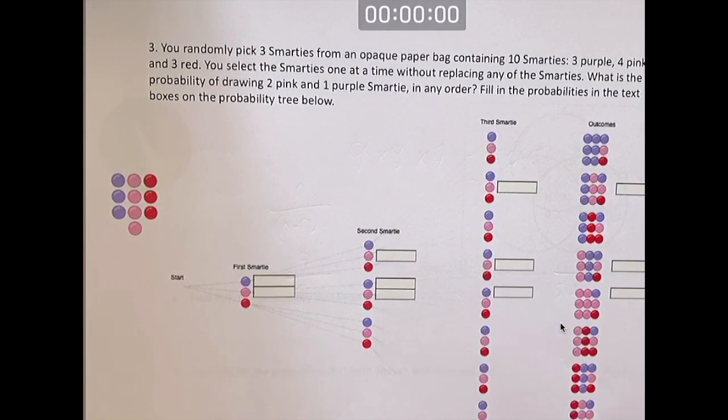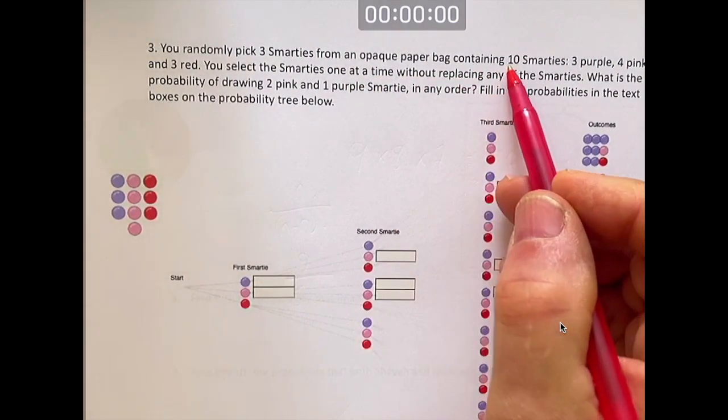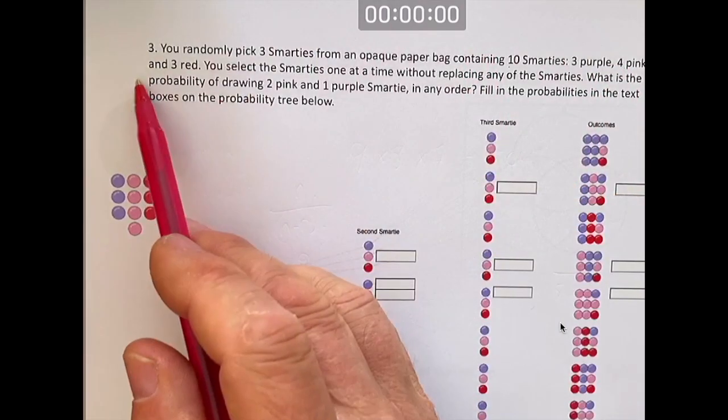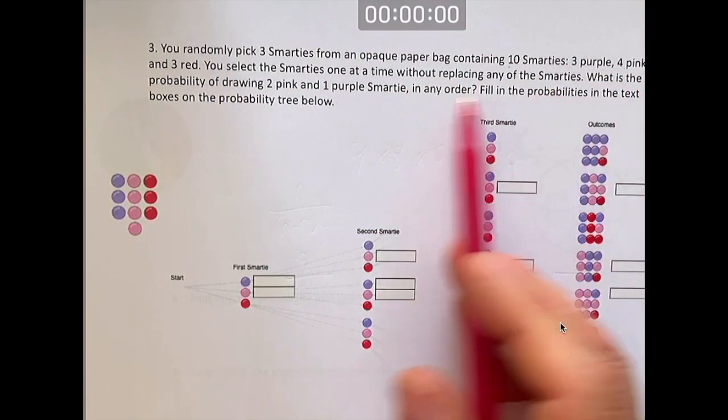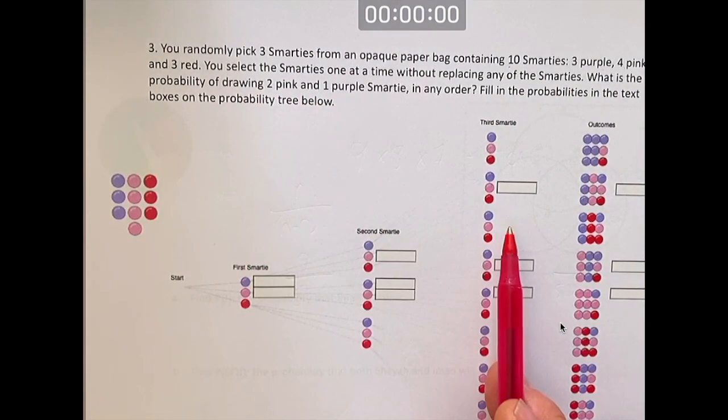Number three, you randomly pick three Smarties from an opaque paper bag containing 10 Smarties. Three are purple, four are pink, three are red. You select the Smarties one at a time without replacing any of the Smarties. What is the probability of drawing two pink and one purple Smartie in any order?